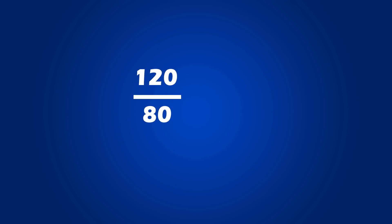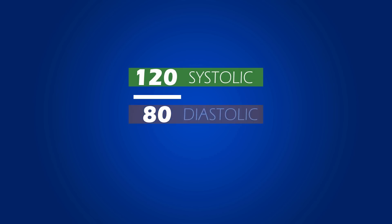If you've ever had your blood pressure taken, you likely noticed that the results were stated as one number over the other, such as 120 over 80. The number on top, in this case 120, represents systolic pressure, and the bottom number, in this case 80, represents the diastolic pressure.